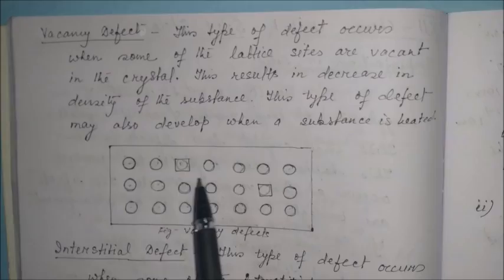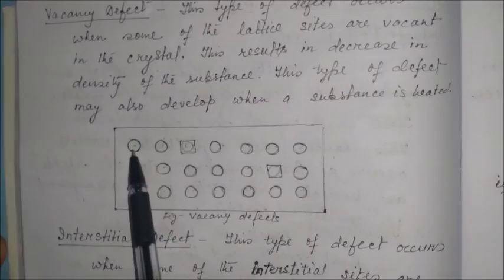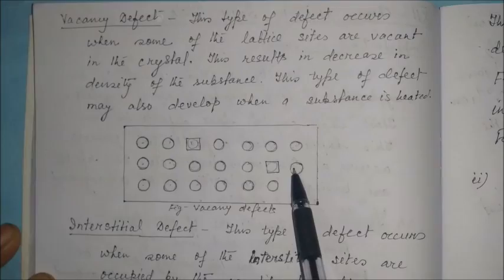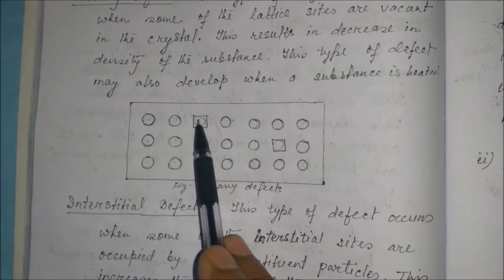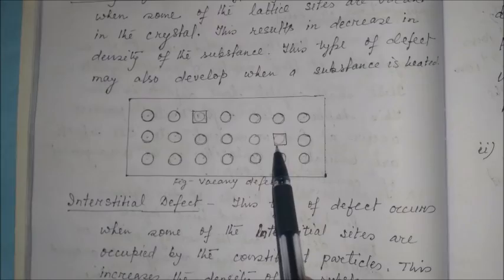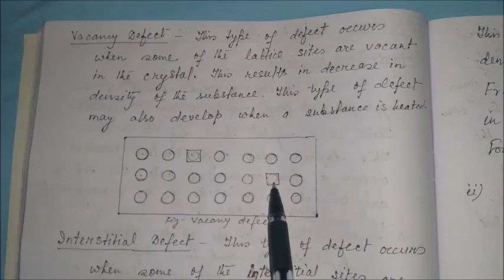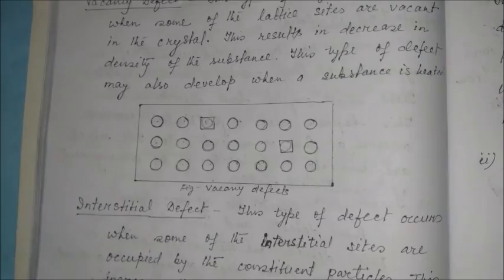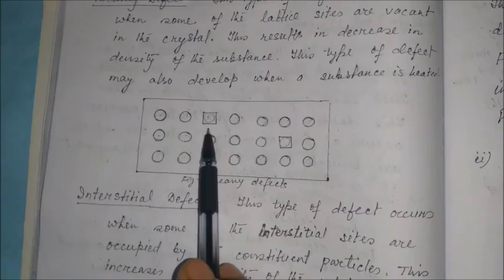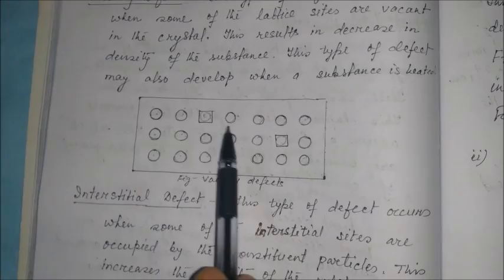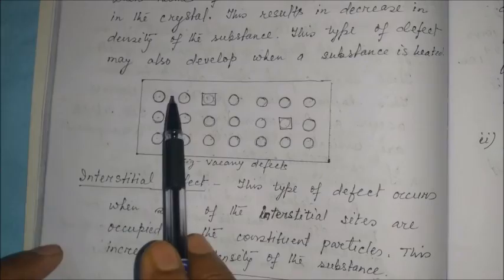Consider this figure representing a small portion of a crystal, where the circles represent constituent particles arranged in a regular pattern. In some positions, particles are missing — these vacant sites represent the vacancy defect. Due to the occurrence of vacancies, particles are not present at those sites, and this is termed the vacancy defect.